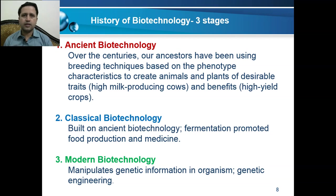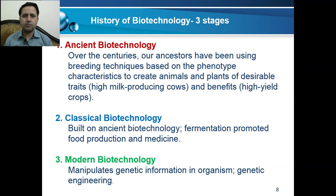The history of biotechnology is divided into three main stages: ancient biotechnology, classical biotechnology, and modern biotechnology. In ancient biotechnology, over the centuries our ancestors used breeding techniques based on phenotypic characteristics to create animals and plants with desirable traits, such as high milk-producing cows and high-yield crops.